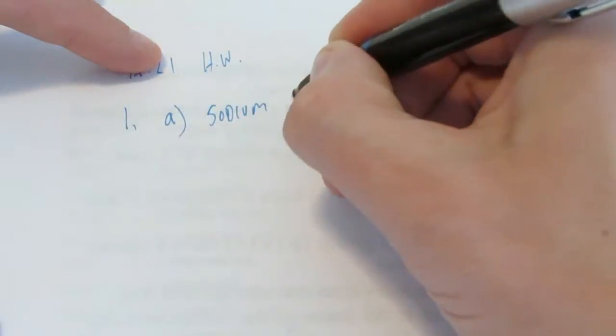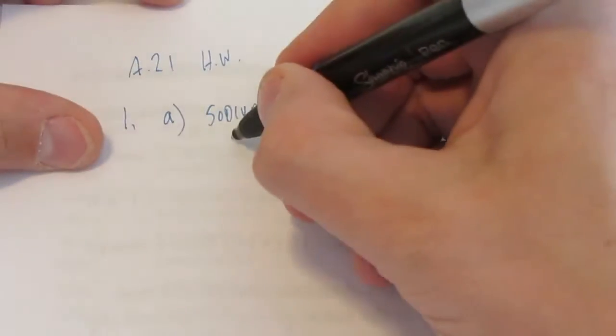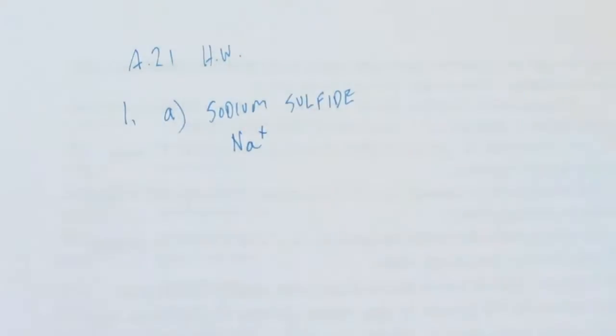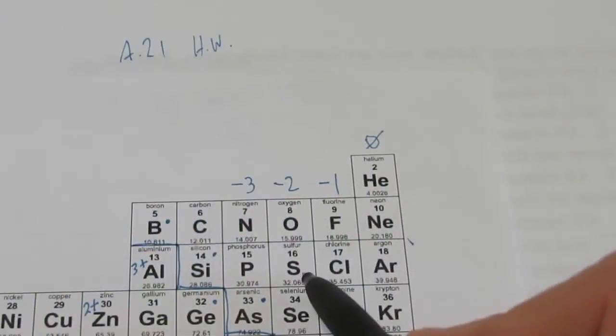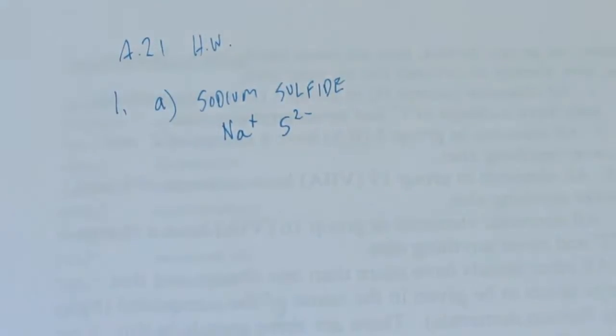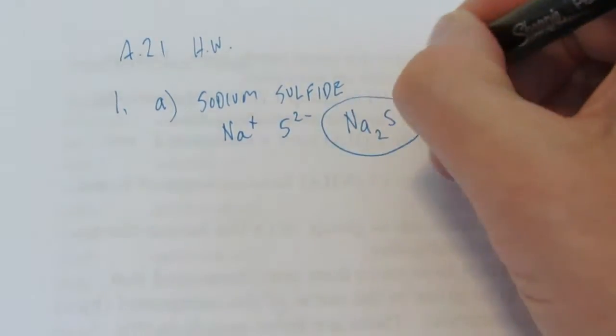Let's do a few from assignment 21 homework. Number 1, letter A says sodium sulfide — write the formula. Sodium is Na, in Group 1, has 11 electrons, wants to get to 10, so it's +1. Sulfide comes from sulfur, atomic number 16, wants to get to 18, so it's 2 negative. The formula is Na2S — you need two sodiums to balance out the charge of that one sulfur.